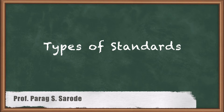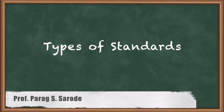Welcome to the new session of Module 1: Introduction to Metrology. The subtopic discussed today is types of standards. In today's session we will cover: the evolution of standards and their roles, different fundamental quantities and their units of measurement, meter as a standard, yard as another standard, material standards, and types of standards such as line standard, end standard, and wavelength standard, along with their characteristics.